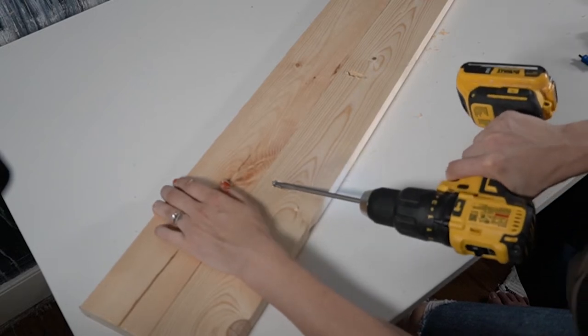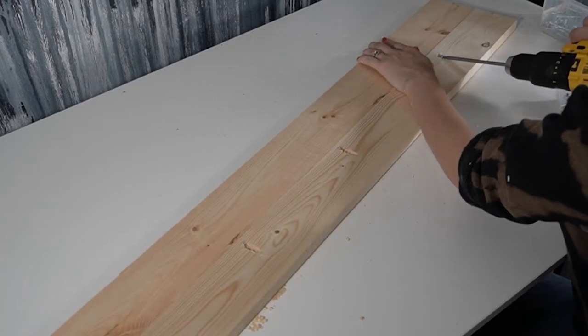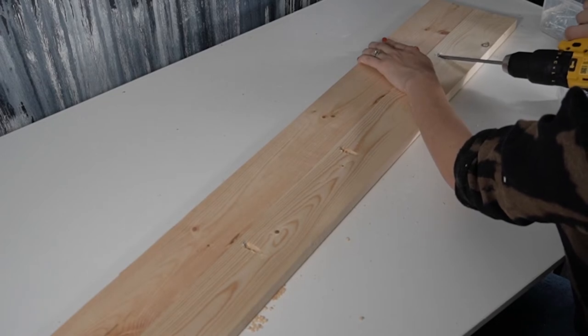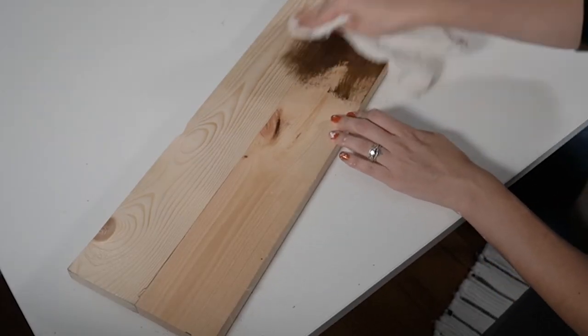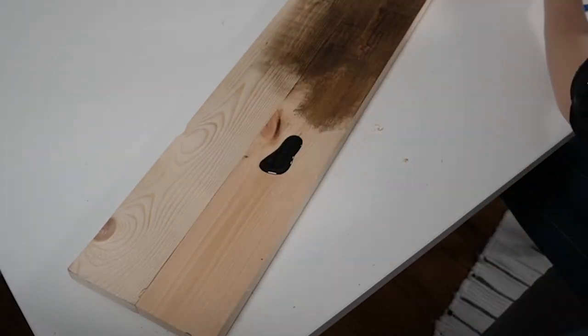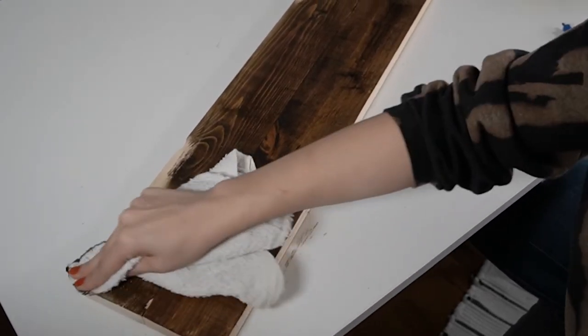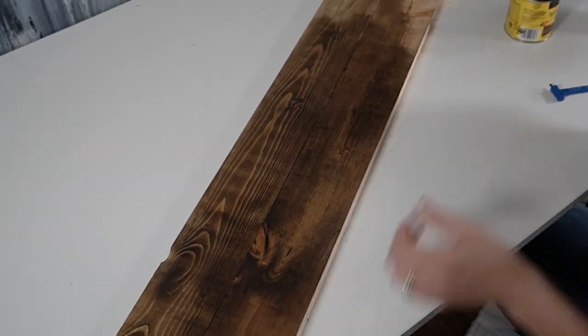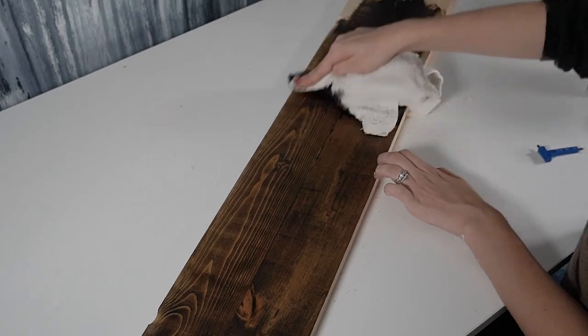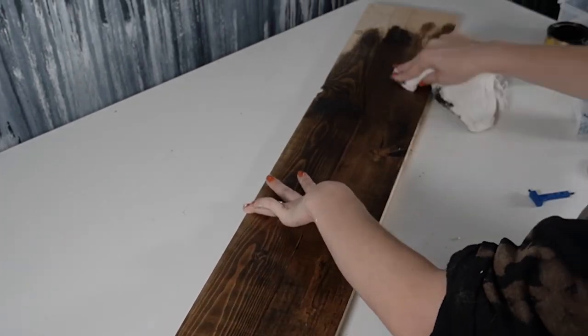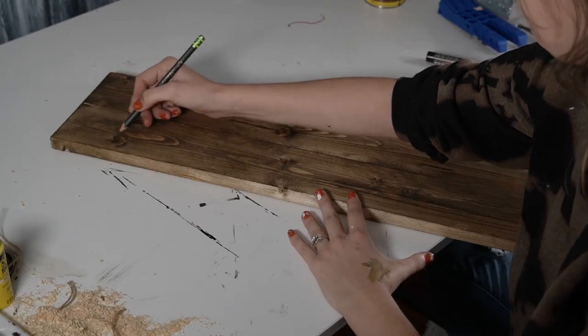And then taking one of those boards, I made three pocket holes in it so that I could attach the two boards side by side and make them one thick piece. And once those two boards were attached together, I flipped them over so that the pocket holes are on the back now, and I stained the whole thing using a dark walnut stain.